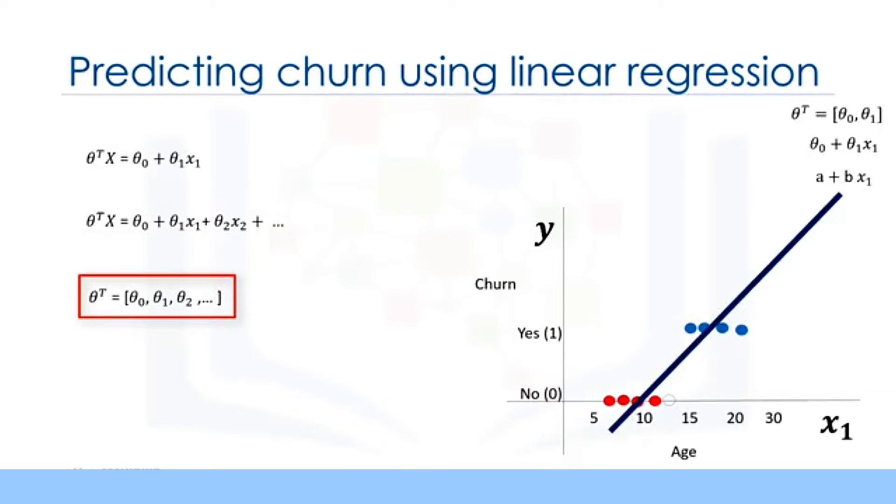As theta is a vector of parameters and is supposed to be multiplied by x, it is shown conventionally as transpose theta. Theta is also called the weights factor, or confidences of the equation, with both these terms used interchangeably. And x is the feature set, which represents a customer. Anyway, given a data set, all the feature sets x theta parameters can be calculated through an optimization algorithm, or mathematically, which results in the equation of the fitting line. For example, the parameters of this line are minus 1 and 0.1, and the equation for the line is minus 1 plus 0.1 x1.